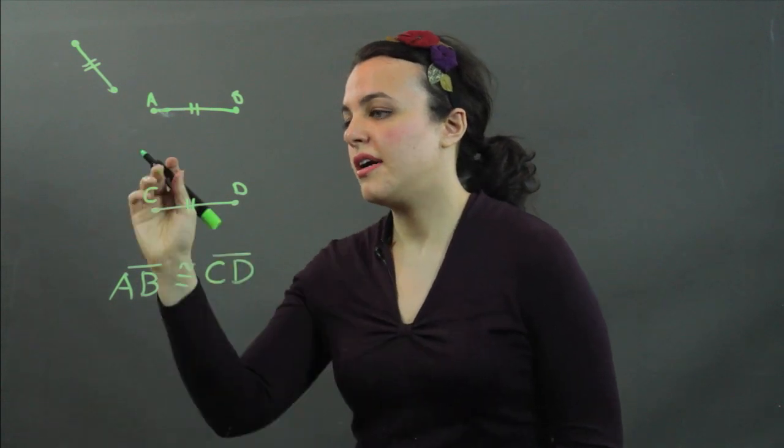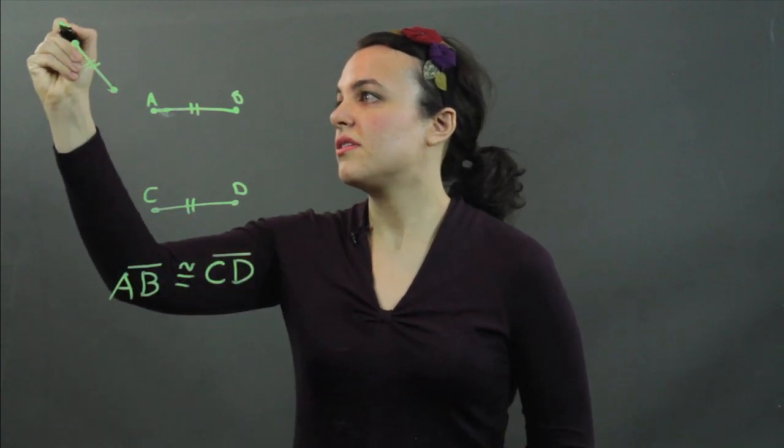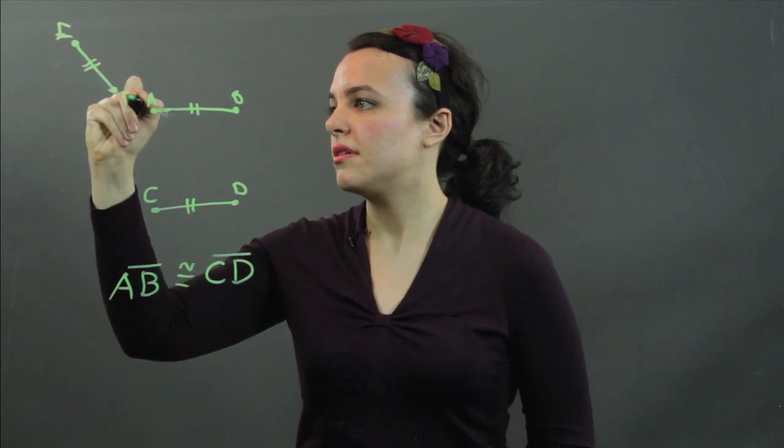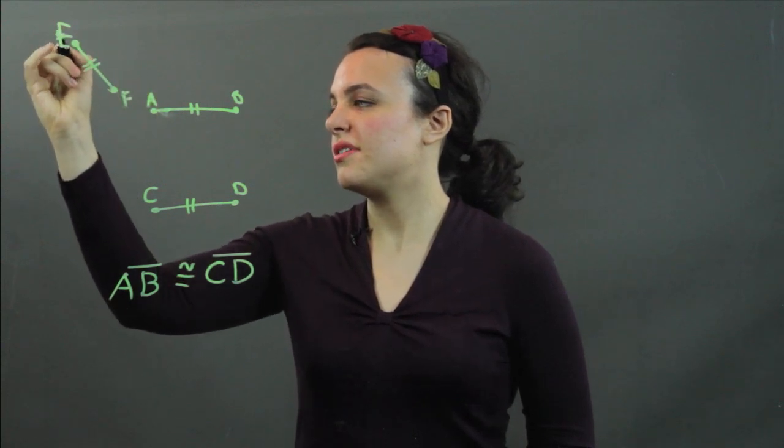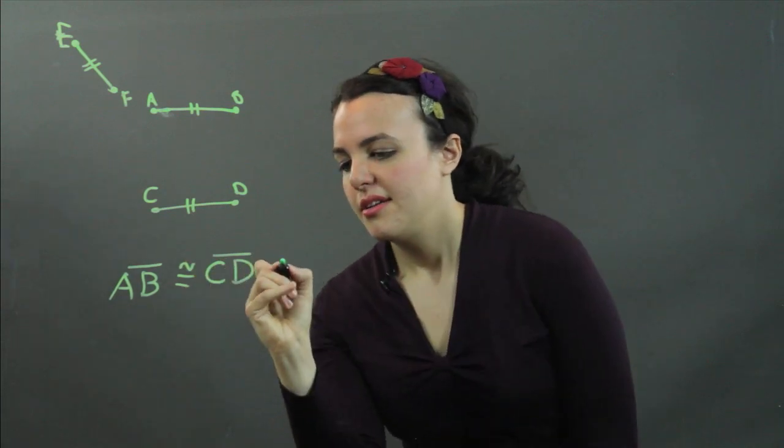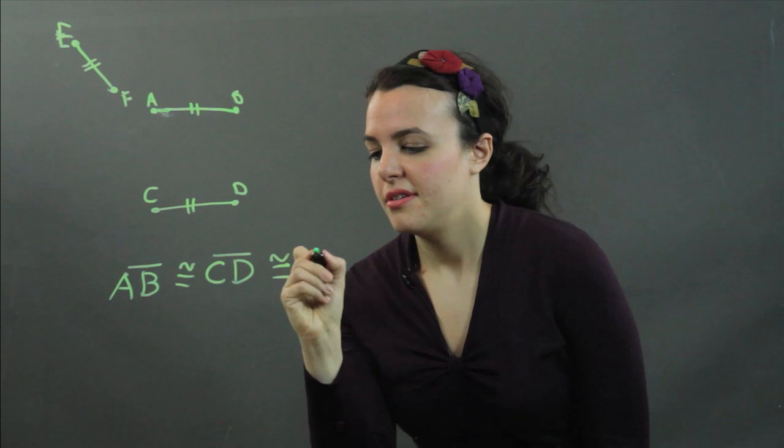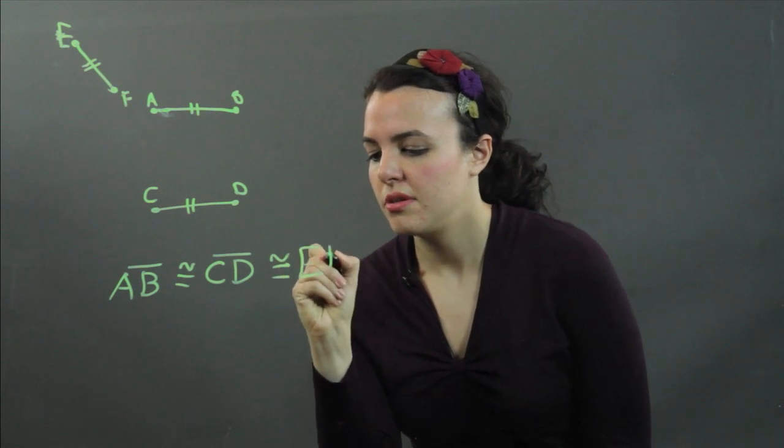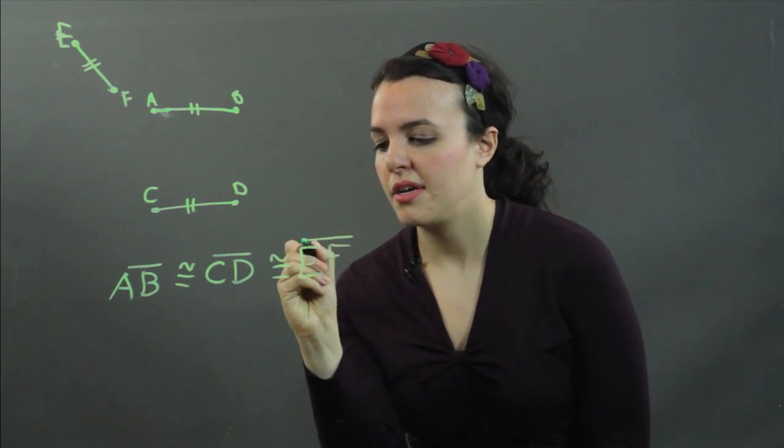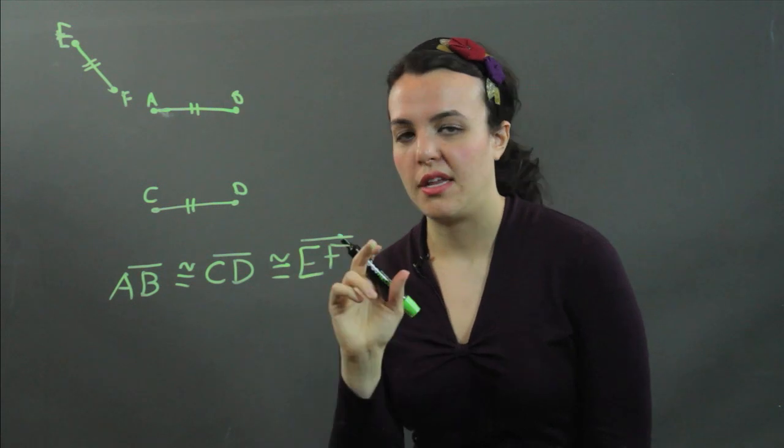And then this little guy here, let's call this one EF, make that look more like an E for you. All three are congruent. So this is congruent also to segment EF. Again, don't just write EF, you need that line over there.